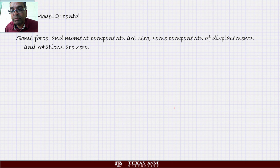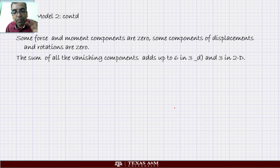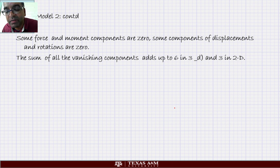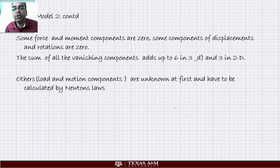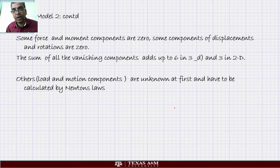For a connector, some force components and some moment components are zero, while some displacement and rotation components are zero. The sum of all of them should add up to six — for example, two force components and four displacement components being zero. The non-zero ones you cannot know a priori; you have to use Newton's laws to find them. The zero ones we know a priori and can set to zero. That's how ideal connectors work.